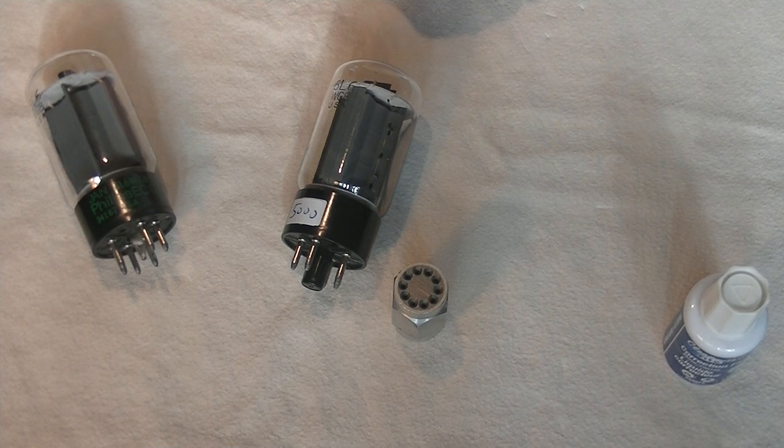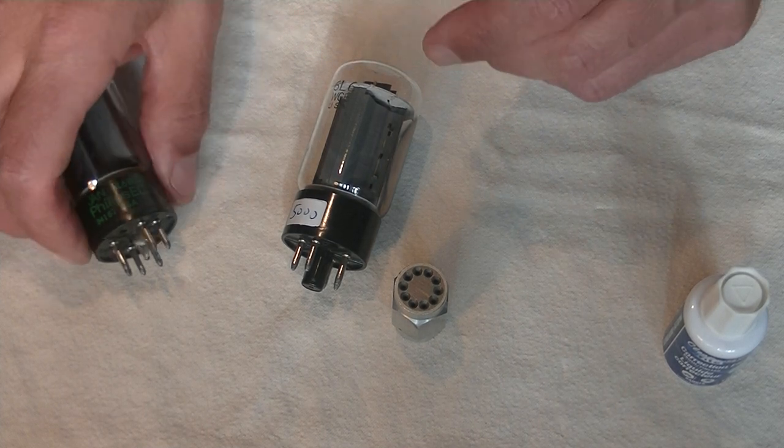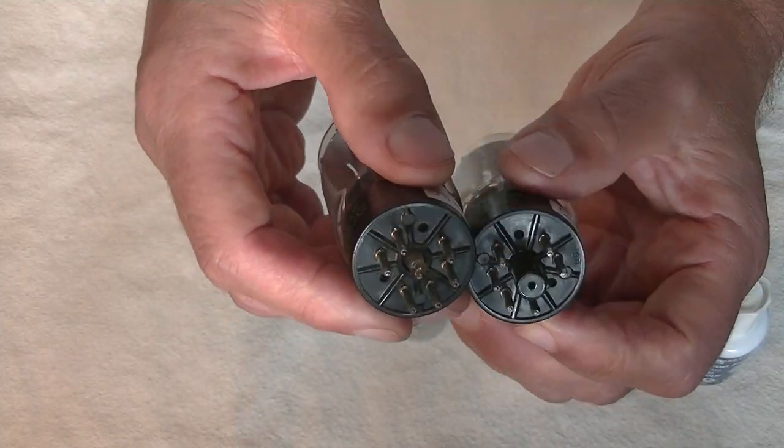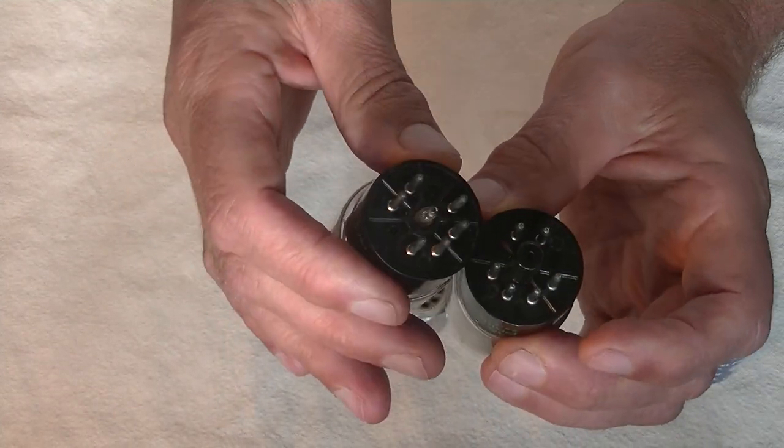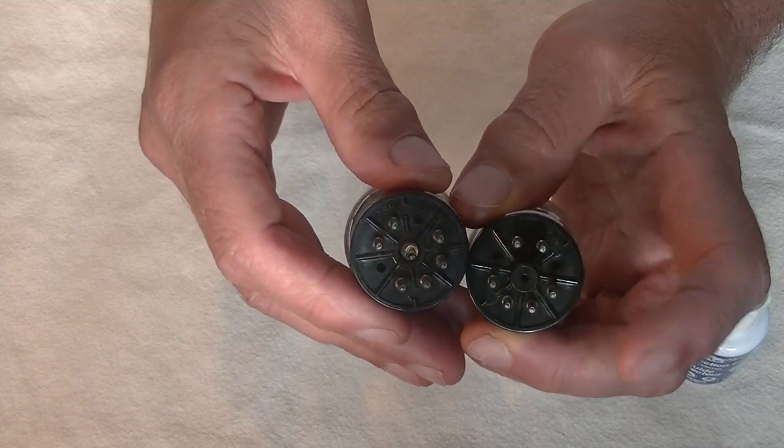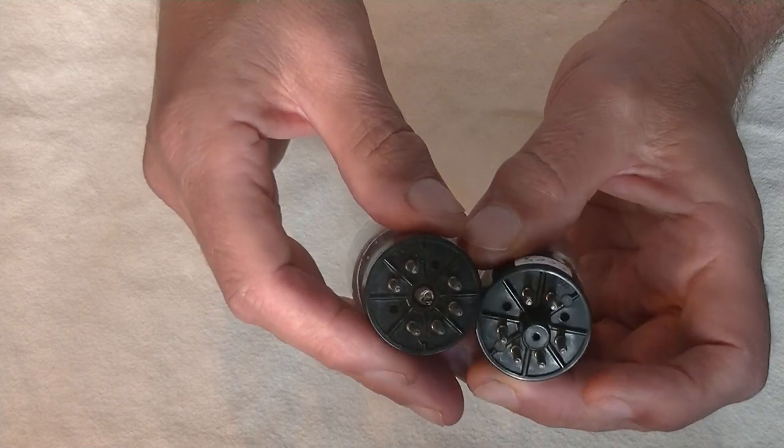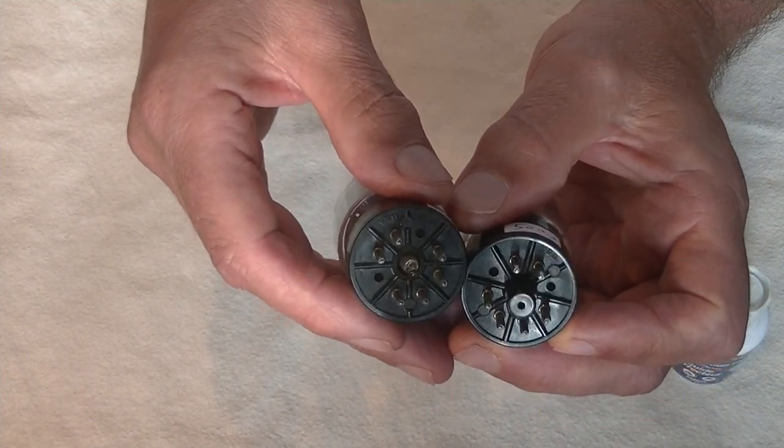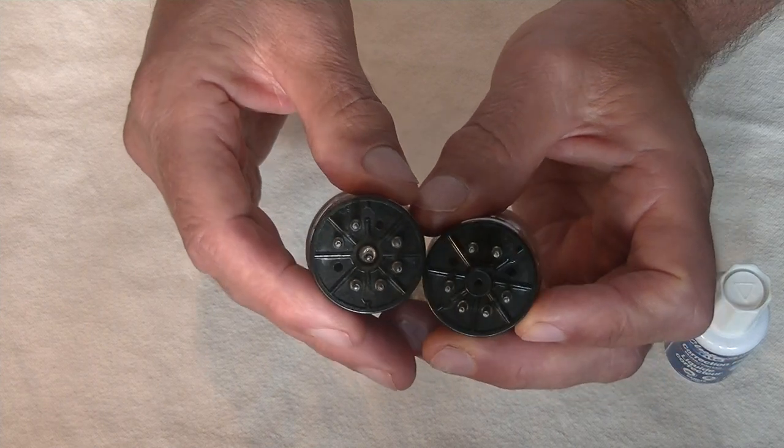Setting all that aside, what to do when the guide pin is broken on an octal? That's a big thing. It happens. Sometimes I get quite a few in with broken guides. The last thing in the world you want to do is to accidentally put the tube in the wrong position and turn on the amp. That's a very bad thing to do.